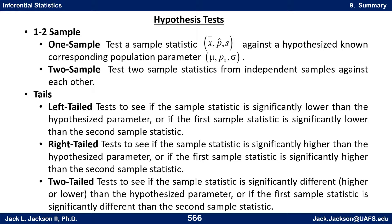A right-tailed test looks for showing something is bigger than hypothesized or 'more than.' Two-tailed tests look for something about just being different — not necessarily higher or lower, but just different. You need to look for those keywords in the problem. Remember that if you have paired data, it's really one sample — find the differences of the pairs and then do a one-sample technique with that.